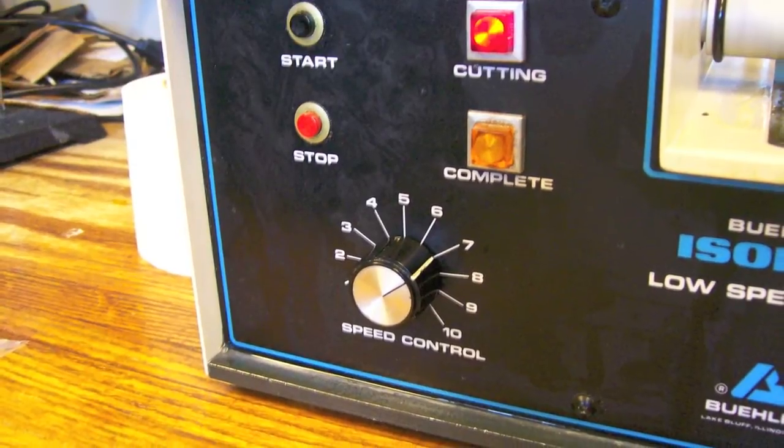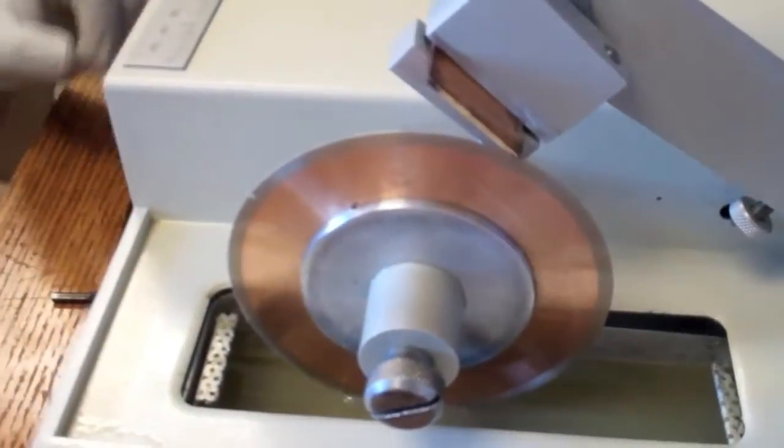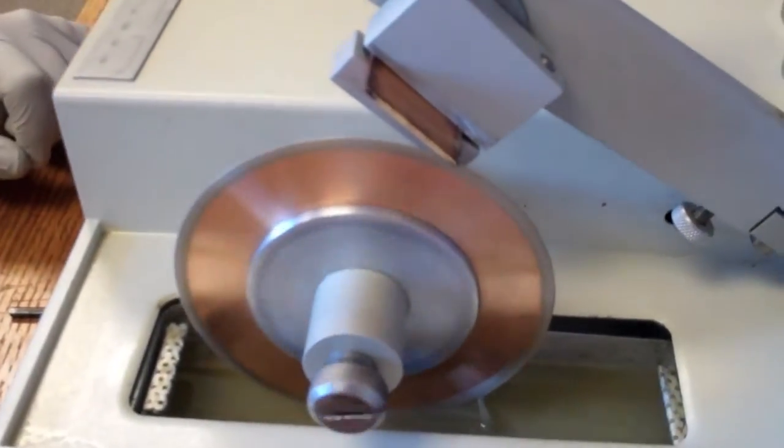The cut piece can be removed and the knob can be used to translate the material for the next cut. Once the material is repositioned, another cut can be made.